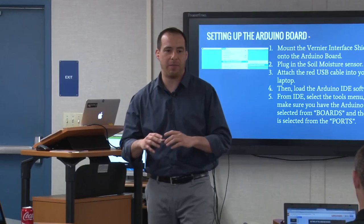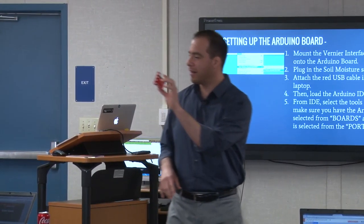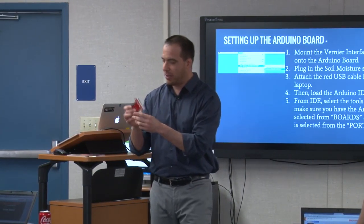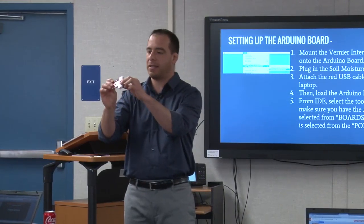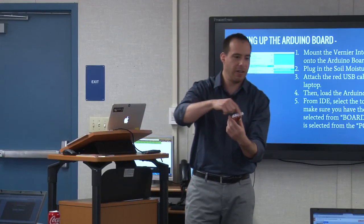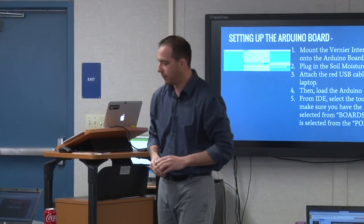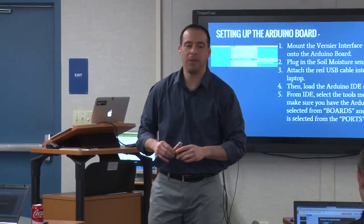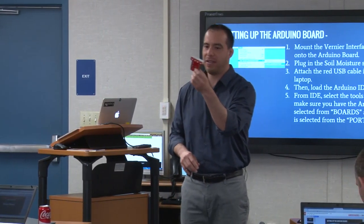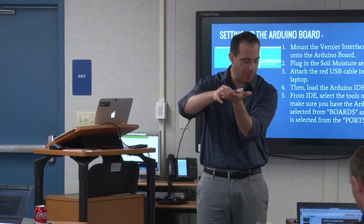This next item is separate from the SparkFun inventor's kit — it's in your blue box in a bubble-wrapped container. This is called an Arduino interface shield. They call them shields because they kind of just connect on top of microprocessors. It has little metal pins that stick out of the bottom.